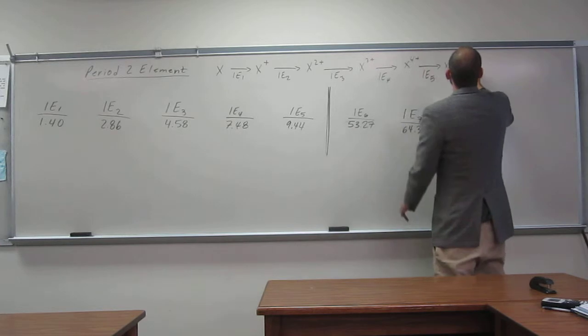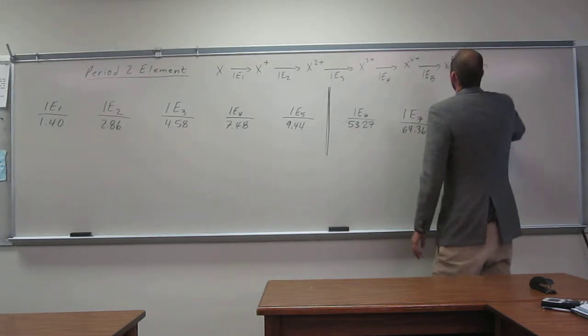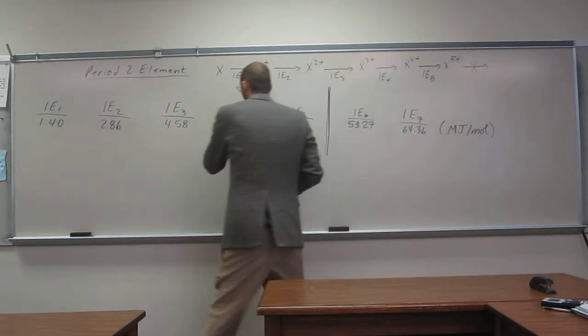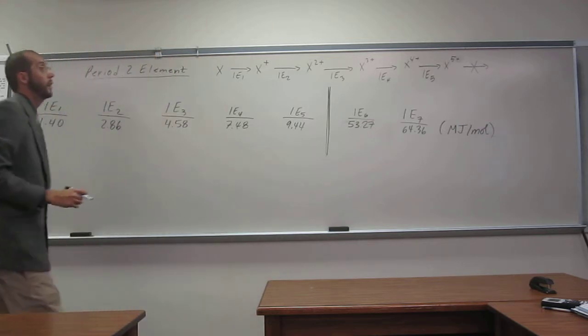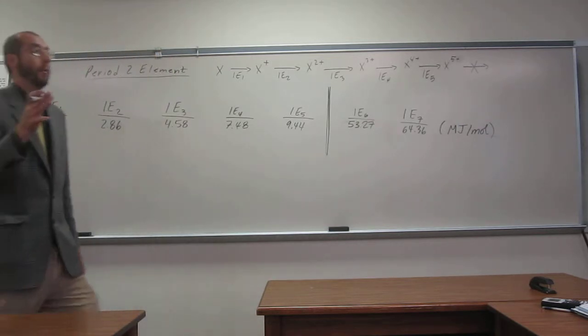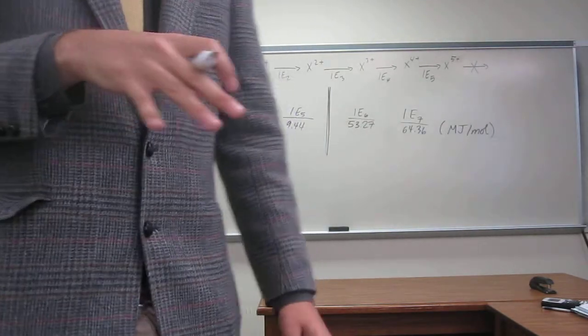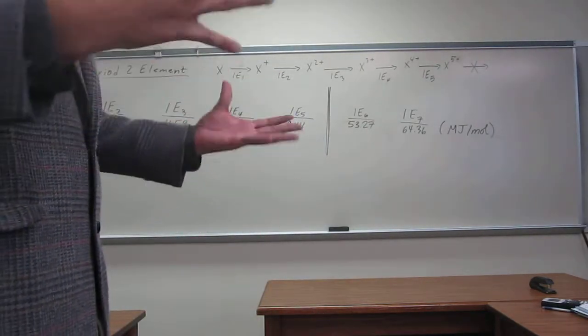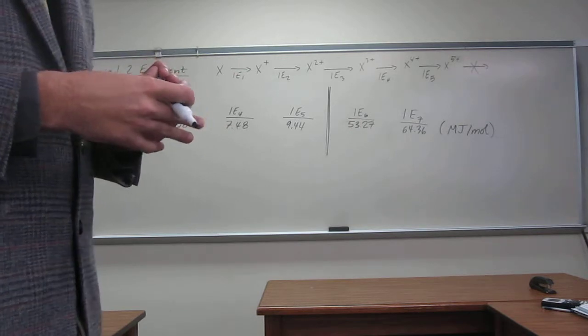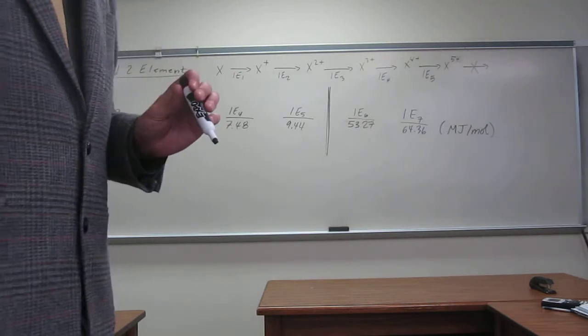And we don't make it to ionization energy 6, or to X6 plus. So what element, if we remove 5 electrons from it, becomes a noble gas that's in period 2? Yeah, so nitrogen.